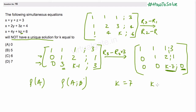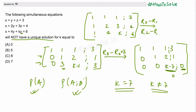We have two possibilities: k equals 7, or k not equal to 7. When k equals 7, the last row becomes all zeros, so the rank is less than 3 — less than the number of variables. But the rank of the coefficient matrix equals the rank of the augmented matrix, so we have infinite solutions.